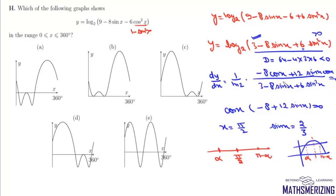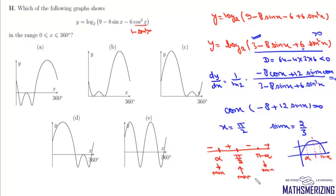Checking the sign of dy/dx at x = 0, we get -8 times a positive value, which is negative. The sign pattern is: minus, plus, minus, plus. Therefore, there is a minima at α, a minima at π - α, and a maxima at π/2.